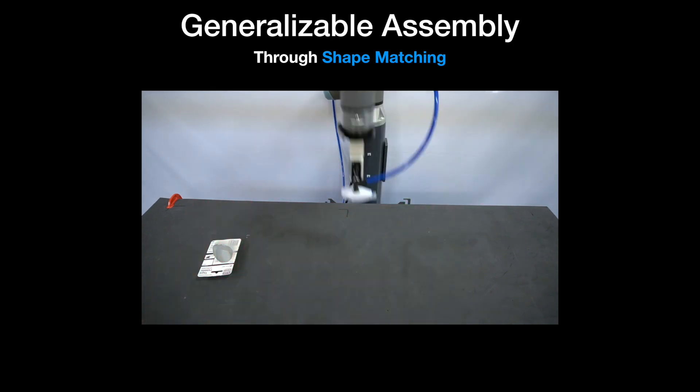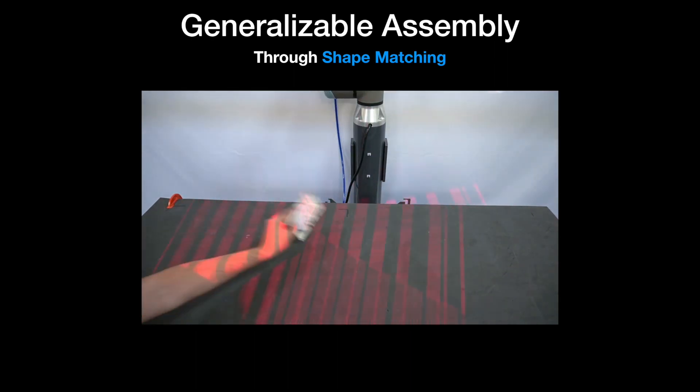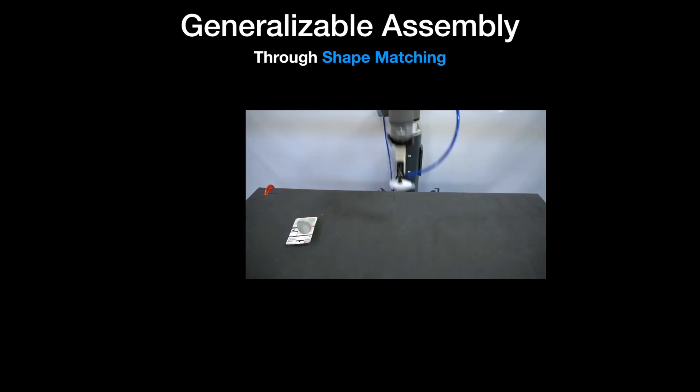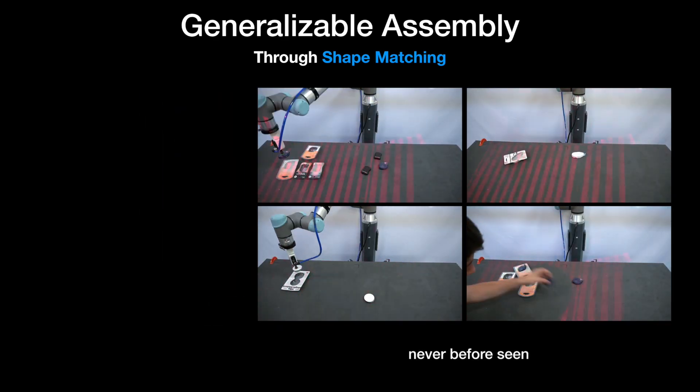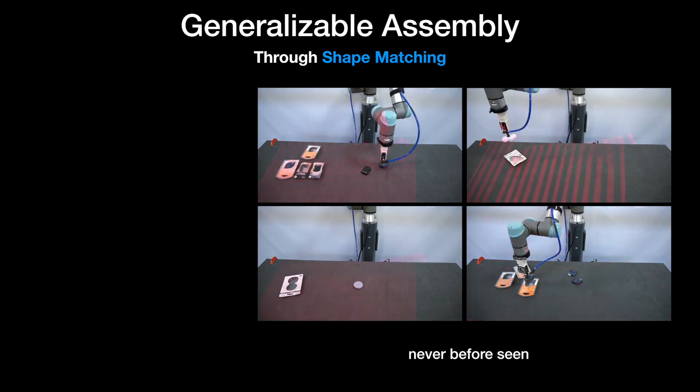Here is a demonstration of our system in action. It learns to use visual and geometric cues to establish correspondences between objects and their target placement locations. Because what it learns is a general matching function, our system is capable of tackling novel tasks at zero additional cost.